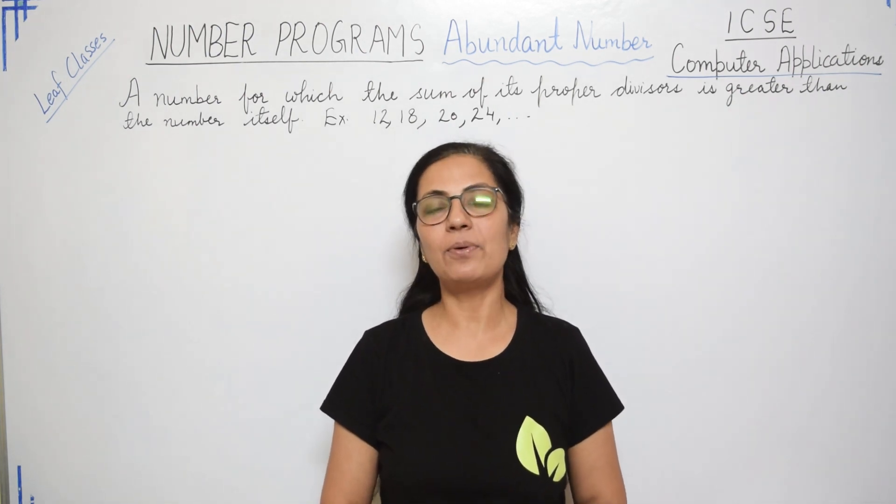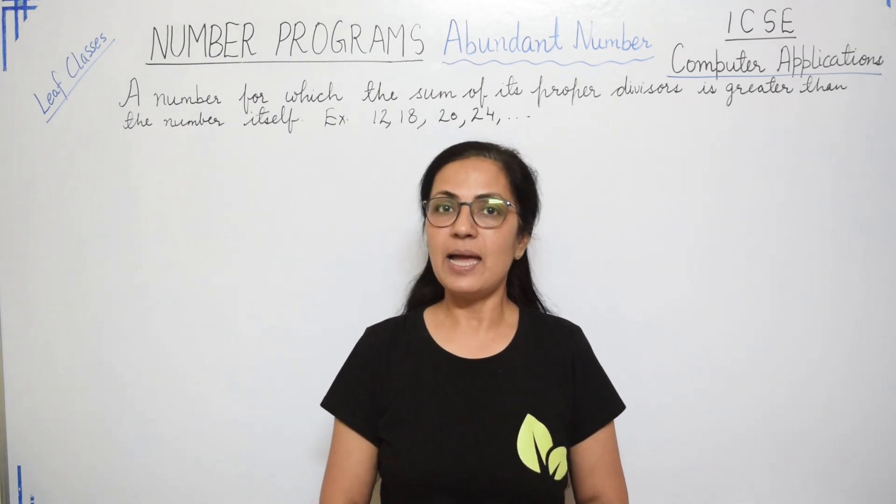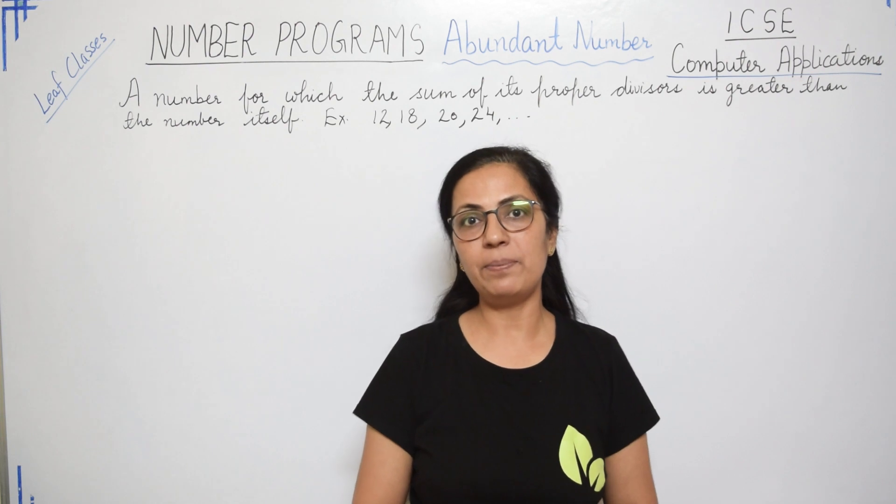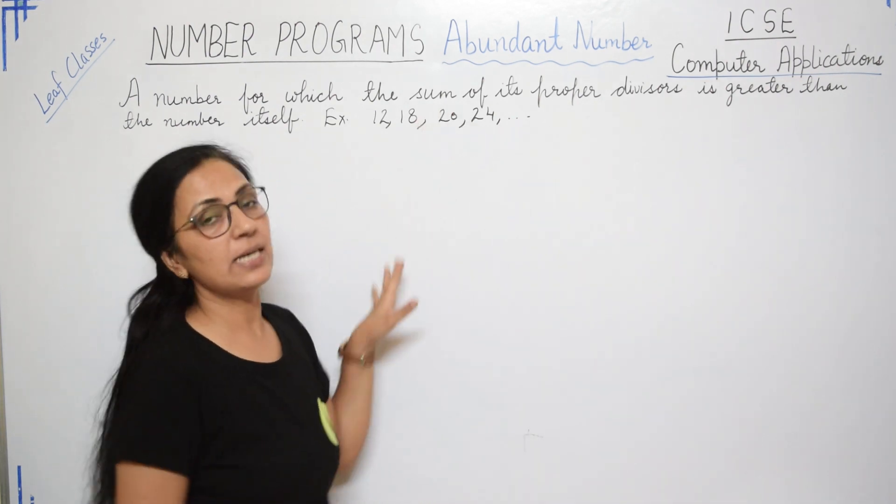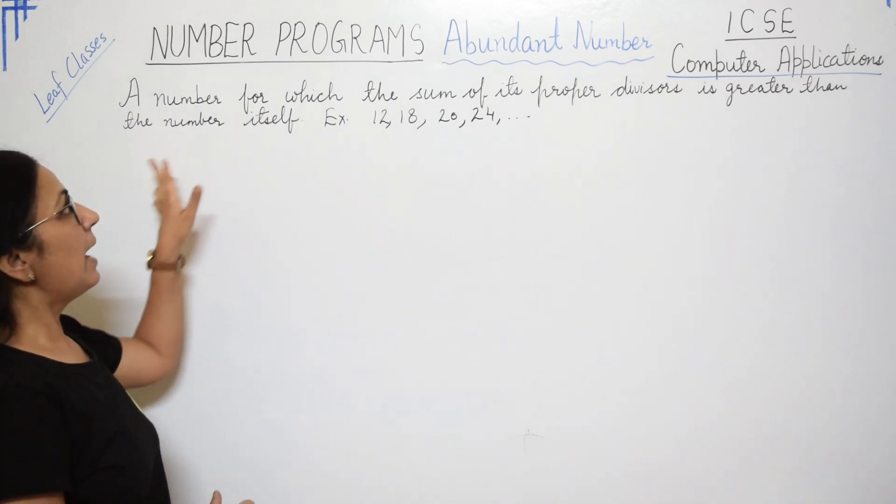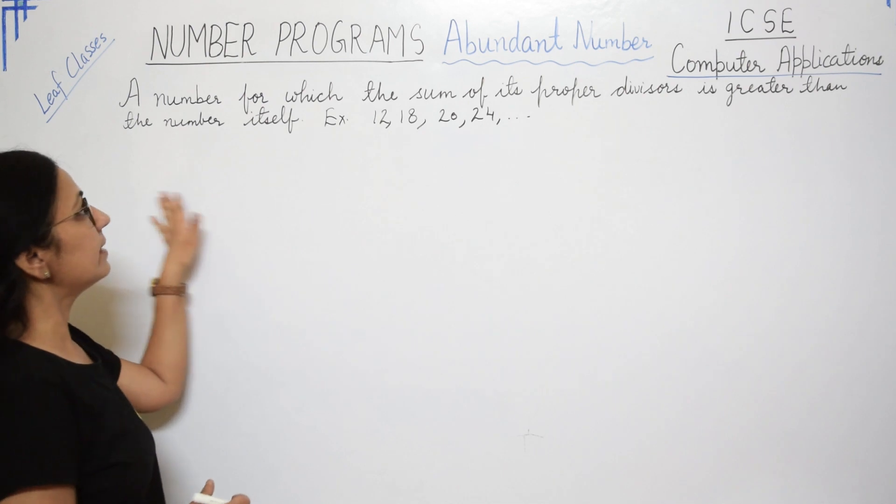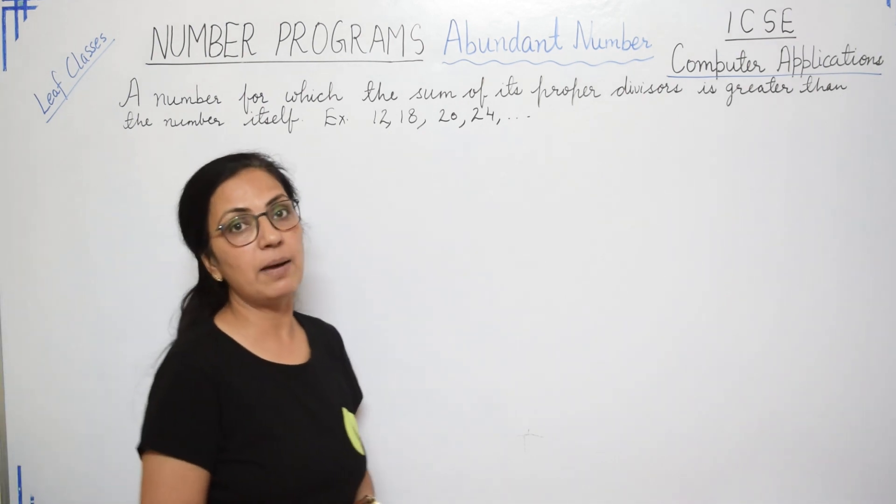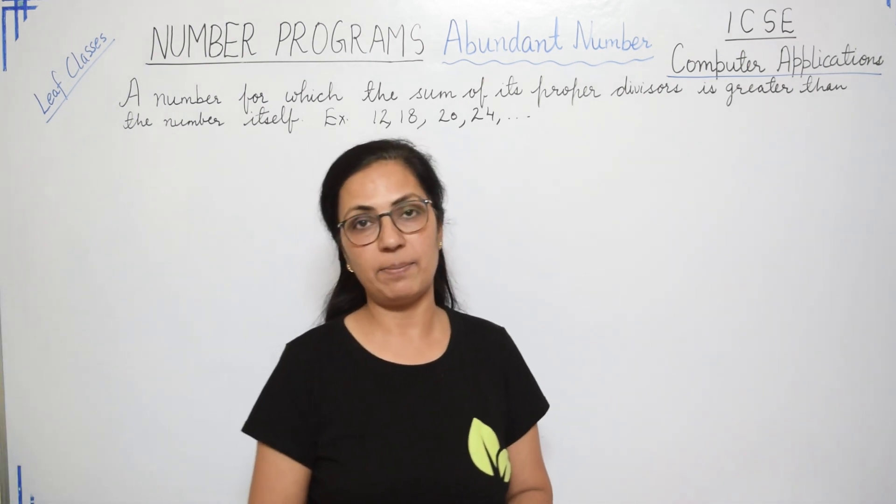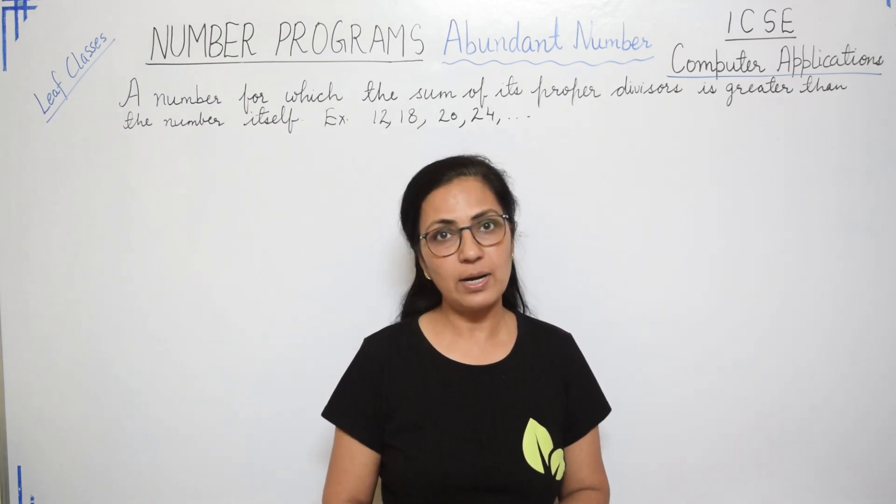Children, we have done so many number programs. You can check those in the playlist of number programs. And today I am here with one more number program of Abundant Number. The definition of Abundant Number I have written here. A number for which the sum of its proper divisors is greater than the number itself, then that number is said to be Abundant Number. The examples are 12, 18, 20, 24 like this.